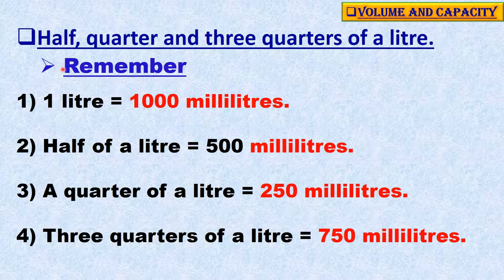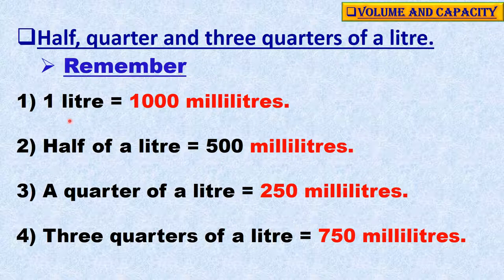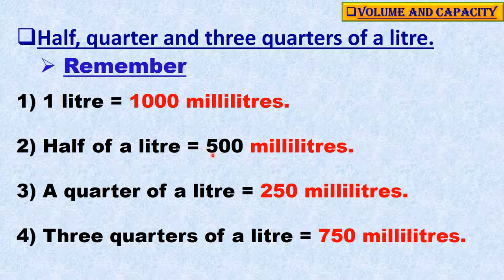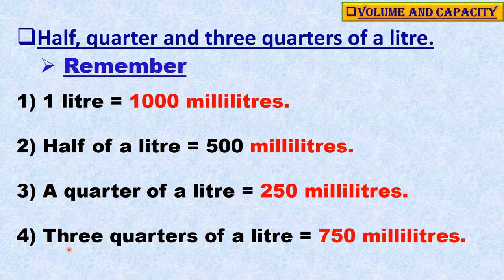Half, Quarter, and Three-Quarters of a Litre. Remember: 1 litre is equal to 1000 millilitres. So, half of a litre is equal to 500 millilitres. A quarter of a litre is equal to 250 millilitres. Three-quarters of a litre is equal to 750 millilitres.